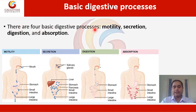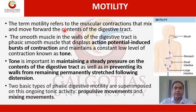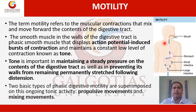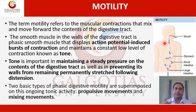There are four basic digestive processes: motility, secretion, digestion, and absorption. Motility refers to the muscular contractions that mix and move forward the contents of the digestive tract. The smooth muscle in the wall of the digestive tract displays action-potential-induced bursts of contraction and maintains a constant low level of contraction known as tone. Tone is important in maintaining steady pressure on the contents and preventing the wall from remaining permanently stretched following distension.